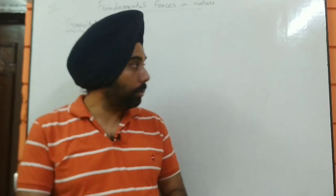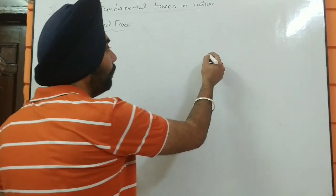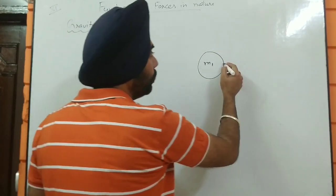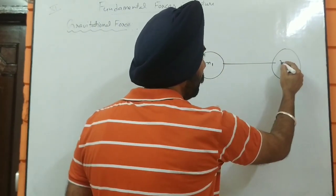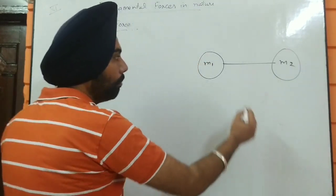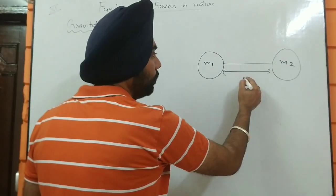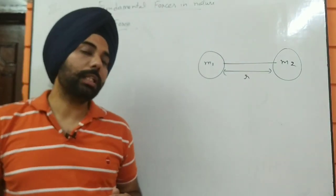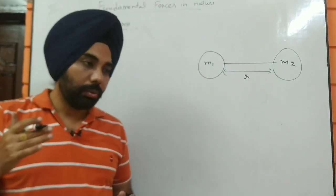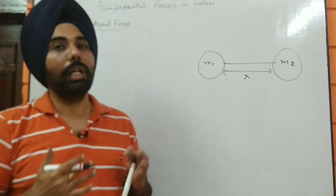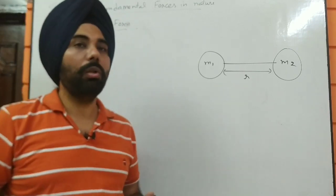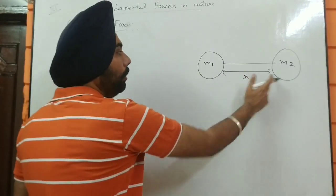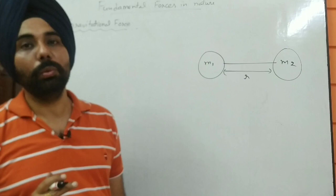We can also draw a diagram. Here we are going to have two masses — let's suppose those masses are m1 and m2, and let's assume the distance between them is r. Now we have to calculate the force between these two masses. According to Newton's Law of Gravitation, the force of attraction between these two masses is directly proportional to the product of their masses.